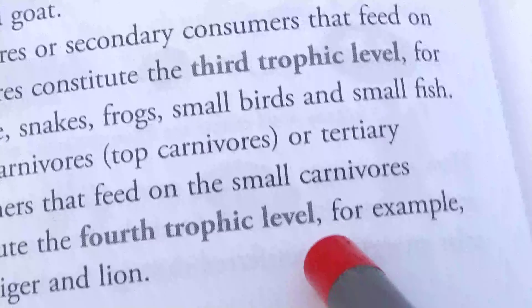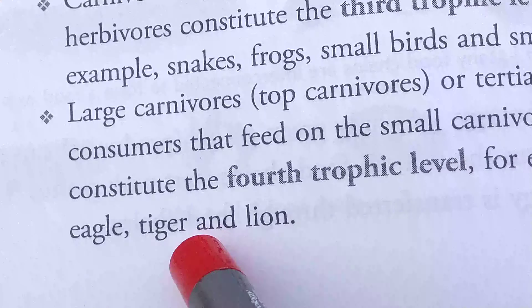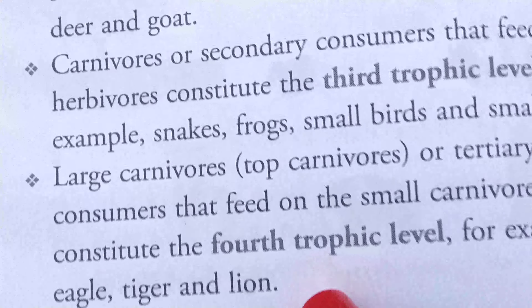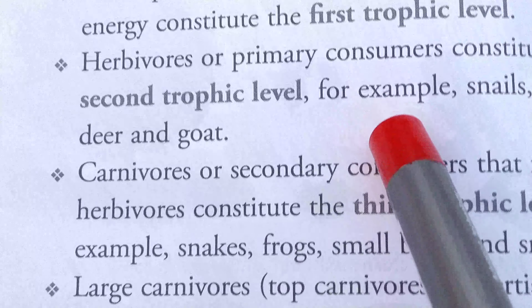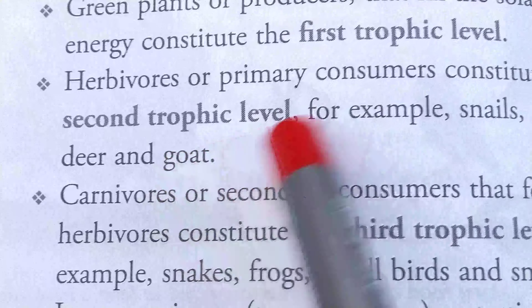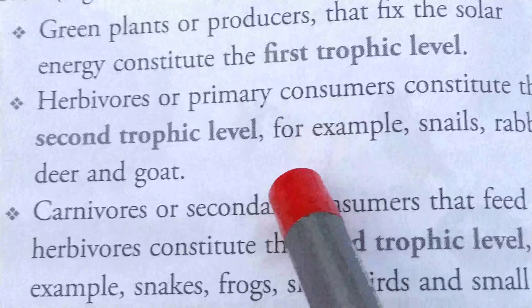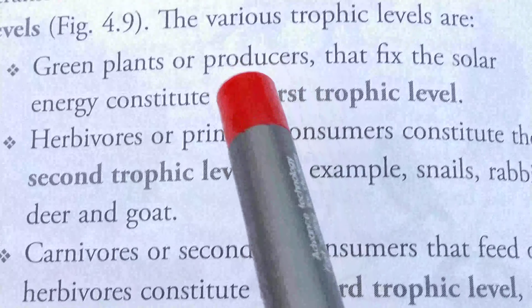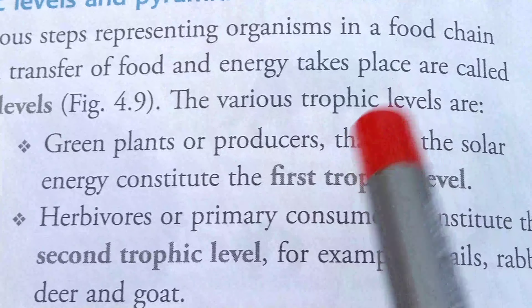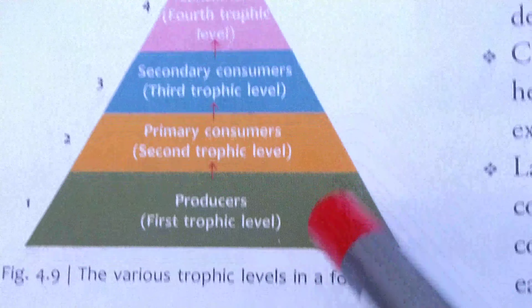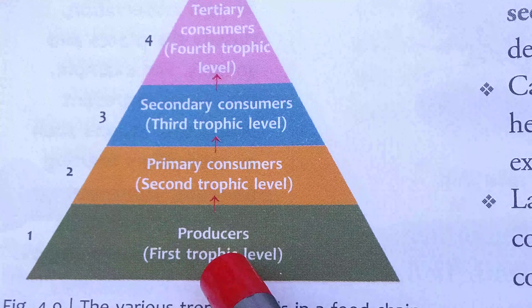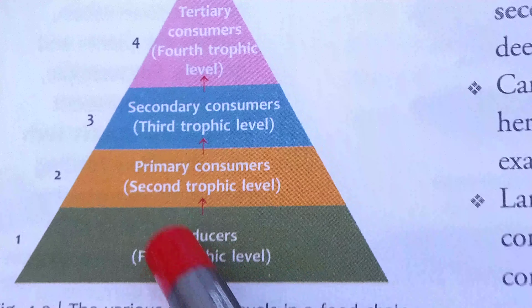So what are Trophic Levels? The various steps representing organisms in a food chain at which transfer of food and energy takes place. It is a kind of food chain where food and energy transfer from one level to another level. This representation is also known as Trophic Levels.